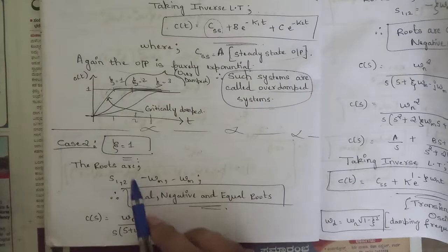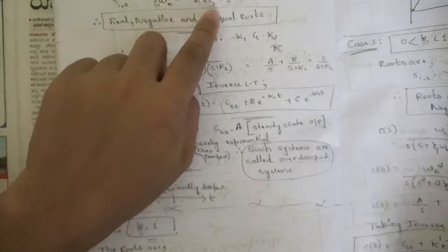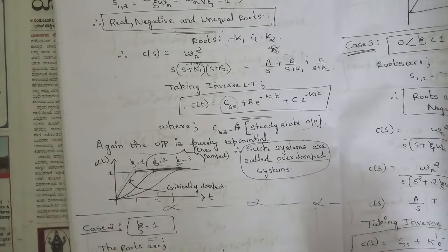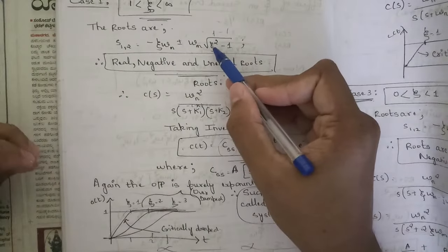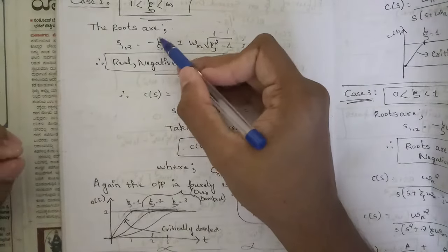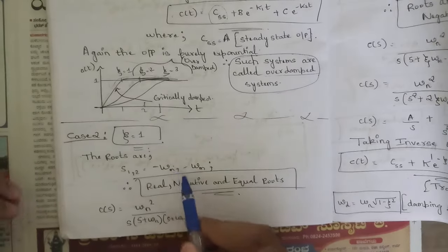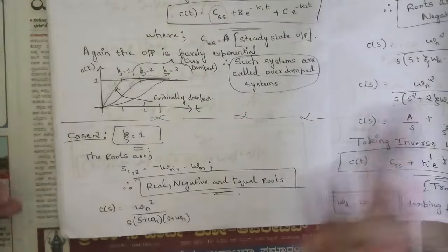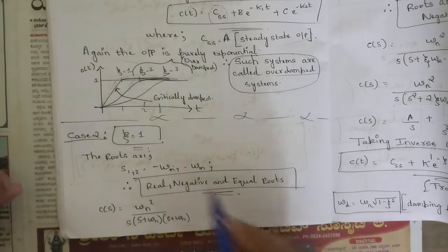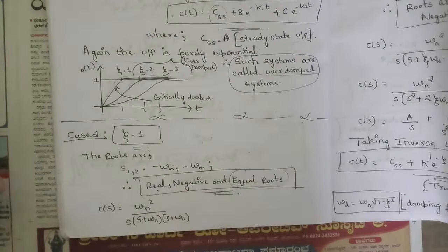Case 2: when zeta is equal to 1. Substituting ζ = 1 into the root formula, the term √(ζ²−1) = √(1−1) = 0 vanishes, giving roots s₁,₂ = −ωn, −ωn. The two roots are real, negative, and equal. Whenever the value of zeta is equal to 1 the roots are real, negative, and equal roots.